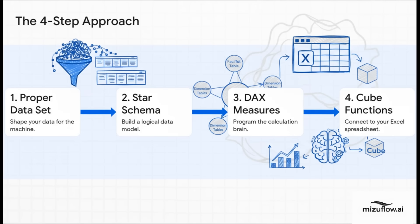Here's the game plan. Step one: we've got to shape our data so the machine can actually work with it. Step two is building a logical data model, what's called a star schema — think of it as the skeleton. Step three, we program the calculation brain using something called DAX measures. And finally, step four, we connect all that power back to our friendly Excel spreadsheet using cube functions. Let's dig into each one.